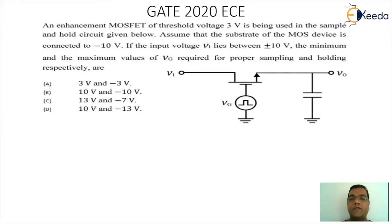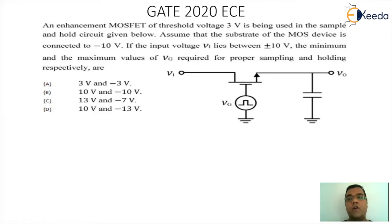If you observe, we are going to give a waveform at VG, and that VG is going to control the status of the MOSFET. The MOSFET operation is going to be either a closed switch or an open switch operation, so that the capacitor can charge and hold the level. That's the concept of sampling and holding.